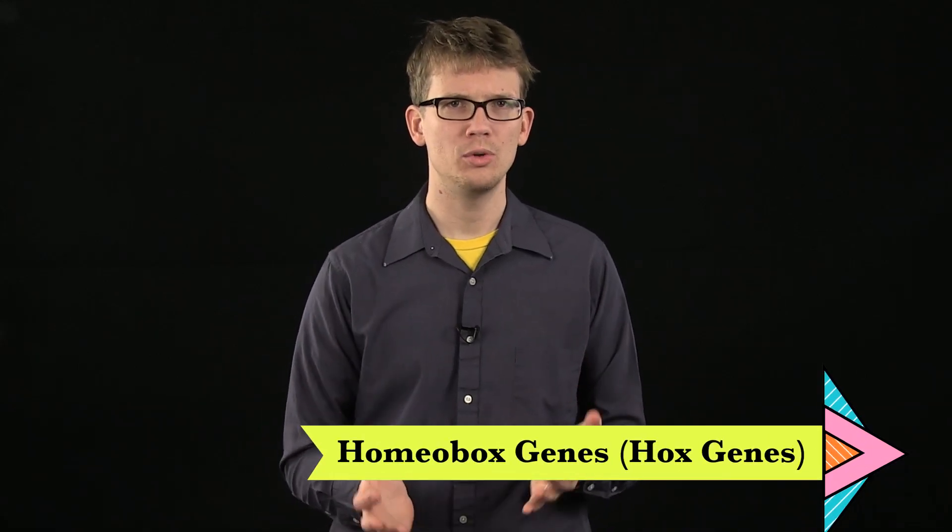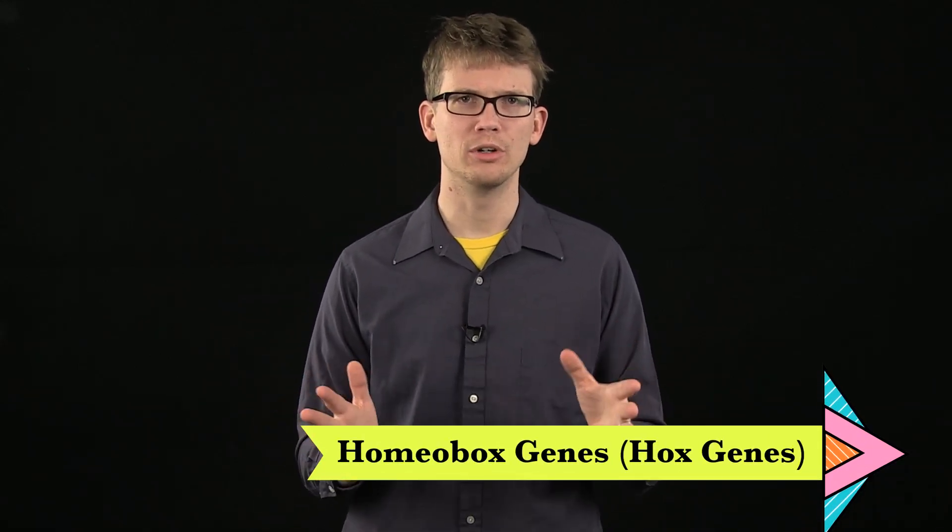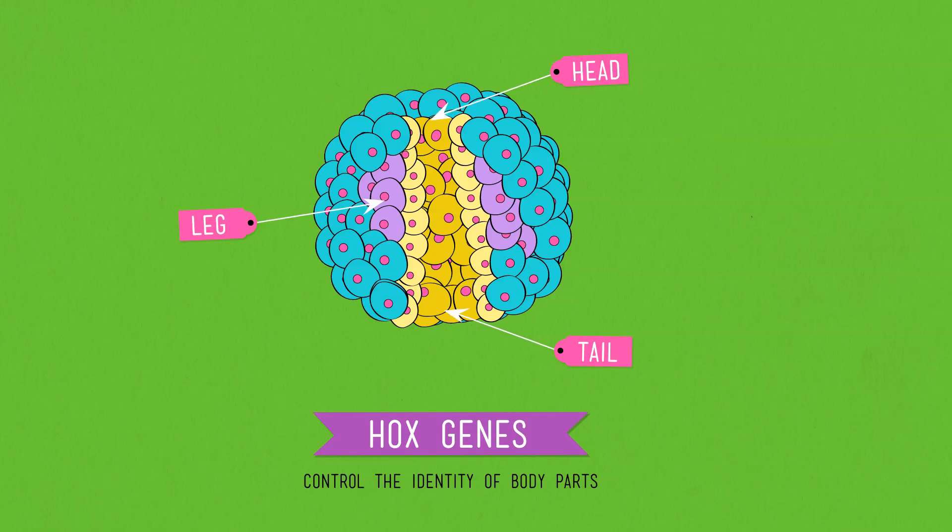Probably the most amazing kind of regulatory genes are the homeobox genes or hox genes, which kick into gear after the embryo is more developed. Hox genes literally control the identity of body parts, setting up how an animal's body is organized. Like, here's where you put the leg and here's where you put the tail.